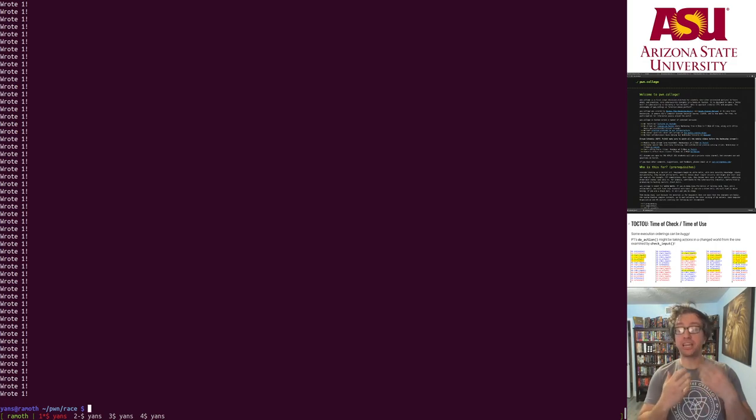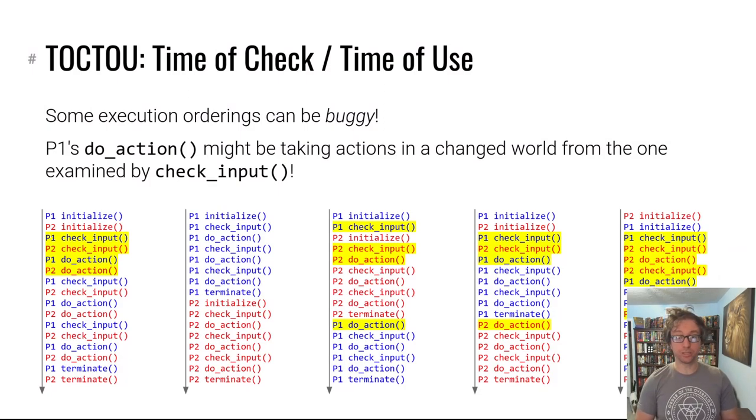All right. So that's a race condition just between two iterations of the same program. So it can be two iterations of a vulnerable program racing against each other. Oftentimes, it is going to be two iterations, two different threads in a vulnerable program. We'll talk about that in a second. Sometimes it is one program racing against you on the command line, doing other stuff in a different process. All right.